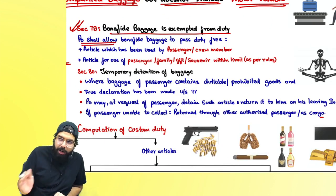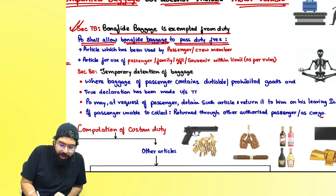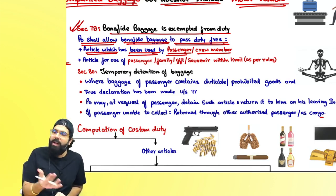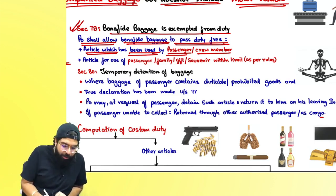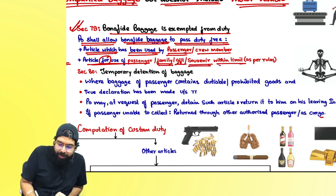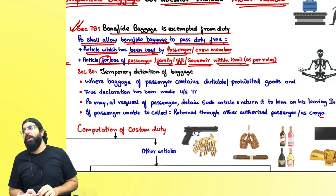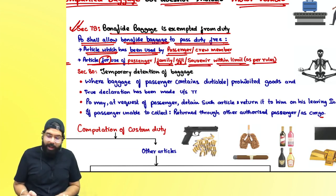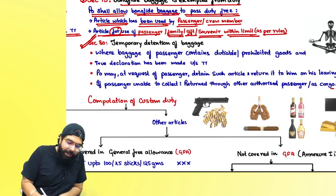Section 79 says bona fide baggage is always exempted from duty — the proper officer shall allow bona fide baggage to pass duty free. Articles which have been used by the passenger or crew member as personal effects will be allowed without any duty. Articles for use by the passenger's family, or gifts or souvenirs within the limit as per rules 3 and 4, and for crew members rule 9 of the baggage rules, are applicable.